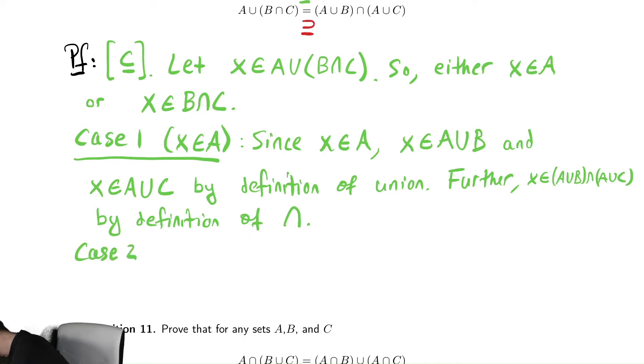Case 2. And that would be x is in B intersect C. In that case, we know that if it's in the intersection, x must be in B and x must be in C. Again, just by definition.